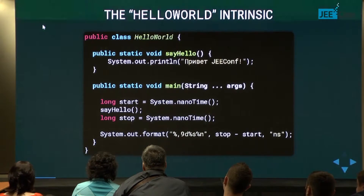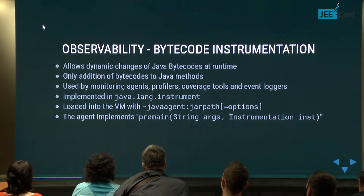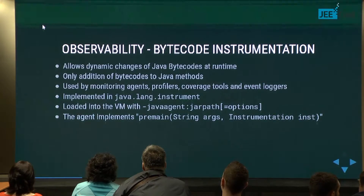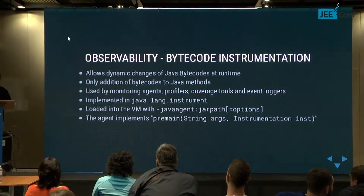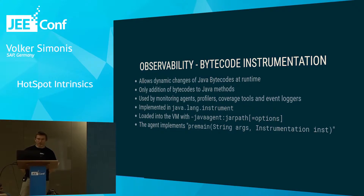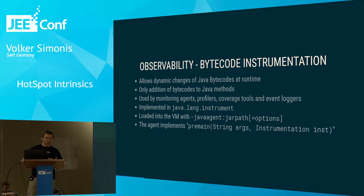Another problem with intrinsics is observability. You may know there is in Java the possibility to use bytecode instrumentation with the java.lang.instrument package and Java agents. This functionality is often used by monitoring agents, coverage tools, or event loggers, which at class loading take your bytecode and insert new calls to some logging function in order to track your program.